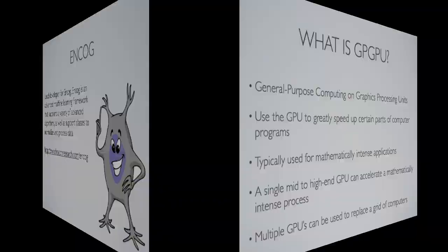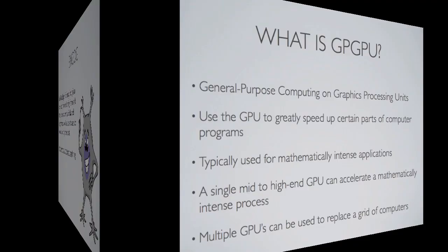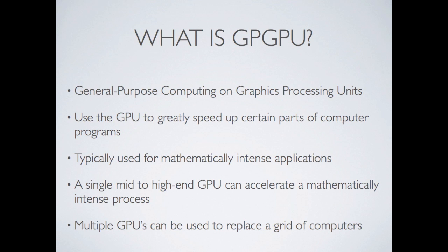Your graphics card, or GPU — Graphic Processing Unit — is normally used just for video and game playing. GPGPU is what this is often called, where you use the GPU for general purpose programming. This is called General Purpose Computing on Graphic Processing Units, GPGPU. This uses the GPU to greatly speed up certain parts of computer programs. It is typically used for mathematically intense applications and is definitely not ideal for every sort of program. A single mid-to-high-end GPU can accelerate a mathematically intense process. Multiple GPUs can replace a grid of computers, sometimes using less power and having less upkeep costs than maintaining a grid of traditional computers.